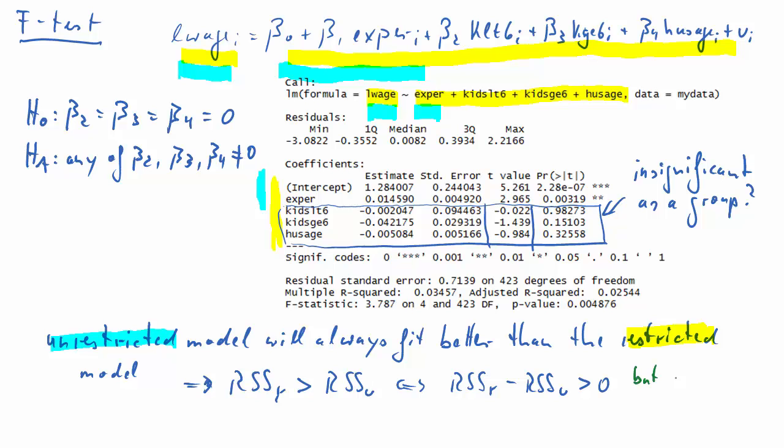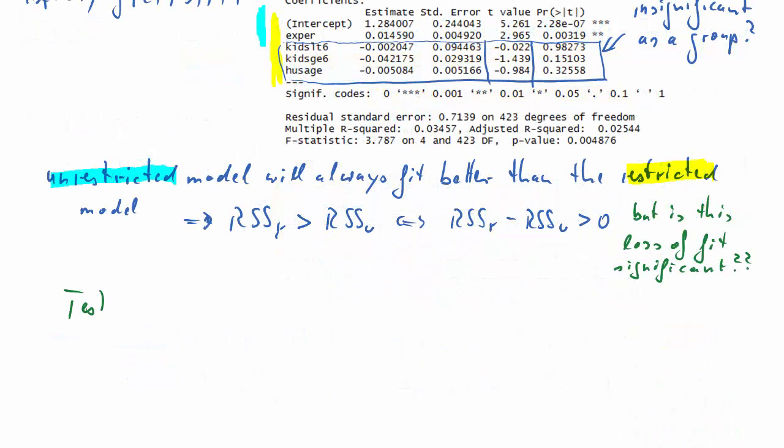The question is, however, when we impose these restrictions, is that difference, which is going to be larger than 0, actually significantly larger than 0? That's the question we want to answer. And as good econometricians, we know what we need is a test statistic to establish that.